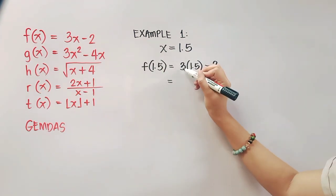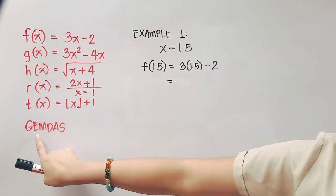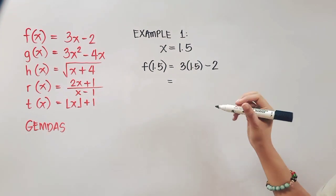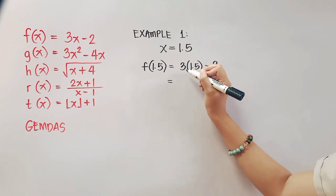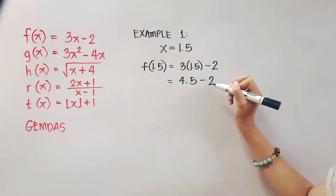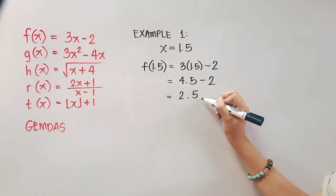To get the value of f(1.5), we have to copy 3 and then substitute x to 1.5 minus 2. Now, this is multiplication. According to GEMDAS, we'll start with multiplication before subtraction. So, we'll multiply 3 times 1.5. That will give us 4.5, and then minus 2.